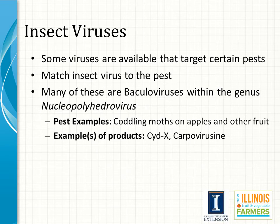Some insect viruses are available that target certain pests. If you choose to use one of these, you want to match the insect virus to the pest you want to target. This category of pesticide is typically called the baculoviruses, within the genus Nucleopolyhedrovirus. The most common one is used to control codling moths on apples and other fruit. Examples of products that target codling moths are CYDX and Coprovirucin.